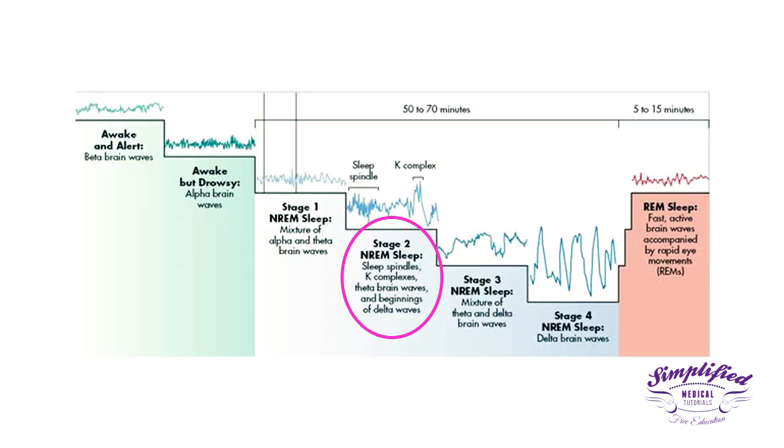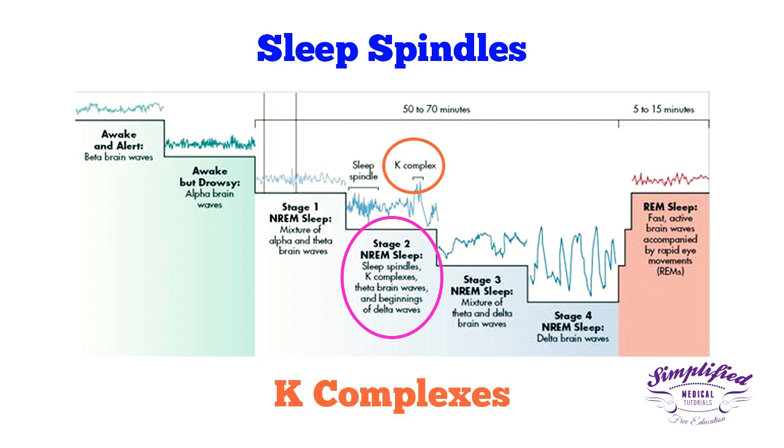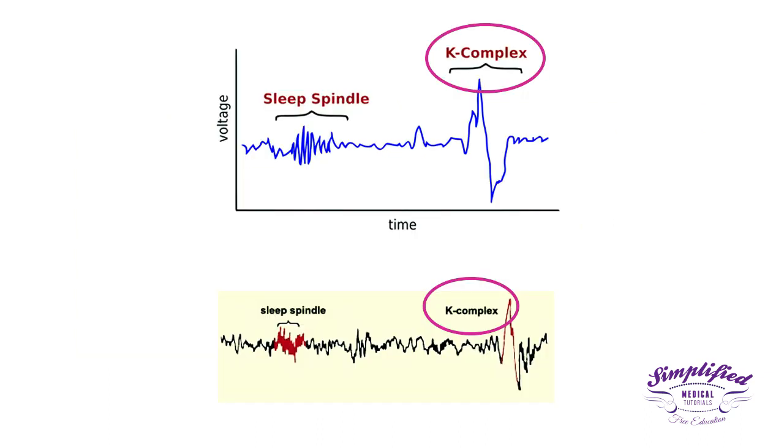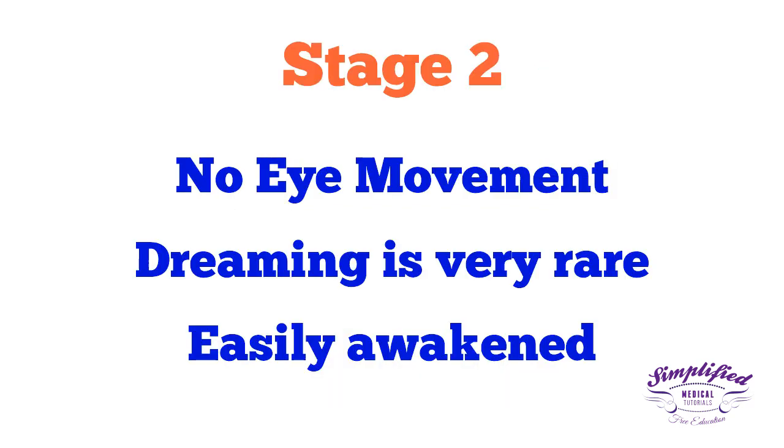Stage 2 is marked by the appearance of sinusoidal waves called sleep spindles and occasional high voltage biphasic waves called K complexes. Sleep spindles are unique to NREM sleep. K complexes are single long delta waves that last only for a second and are also unique to NREM sleep. In stage 2, no eye movement occurs and dreaming is very rare. The sleeper is quite easily awakened in this stage.